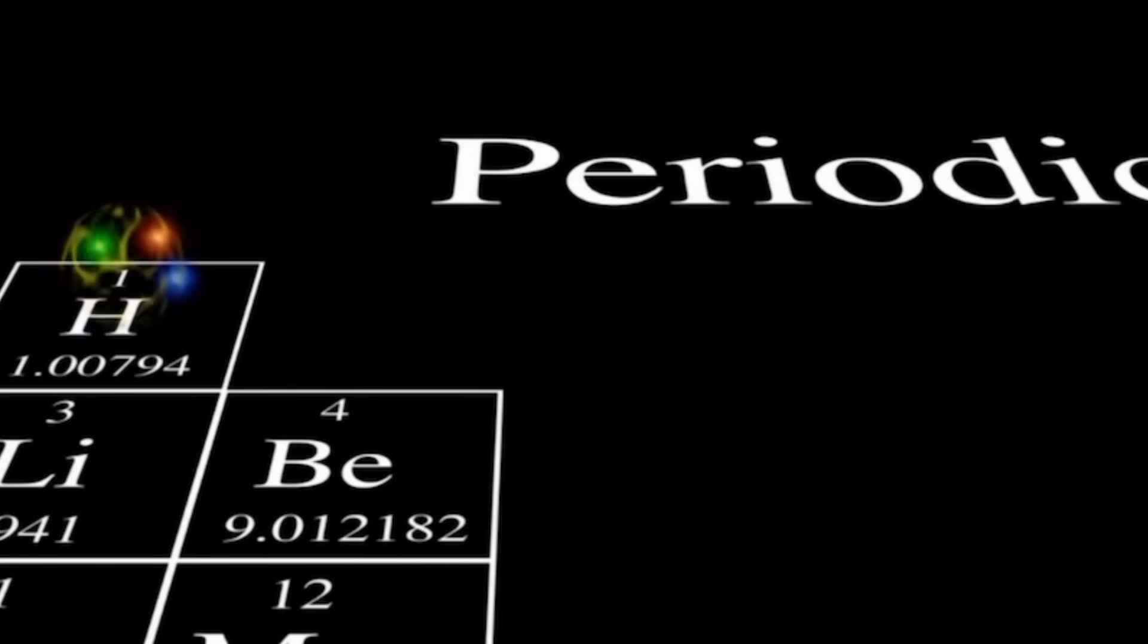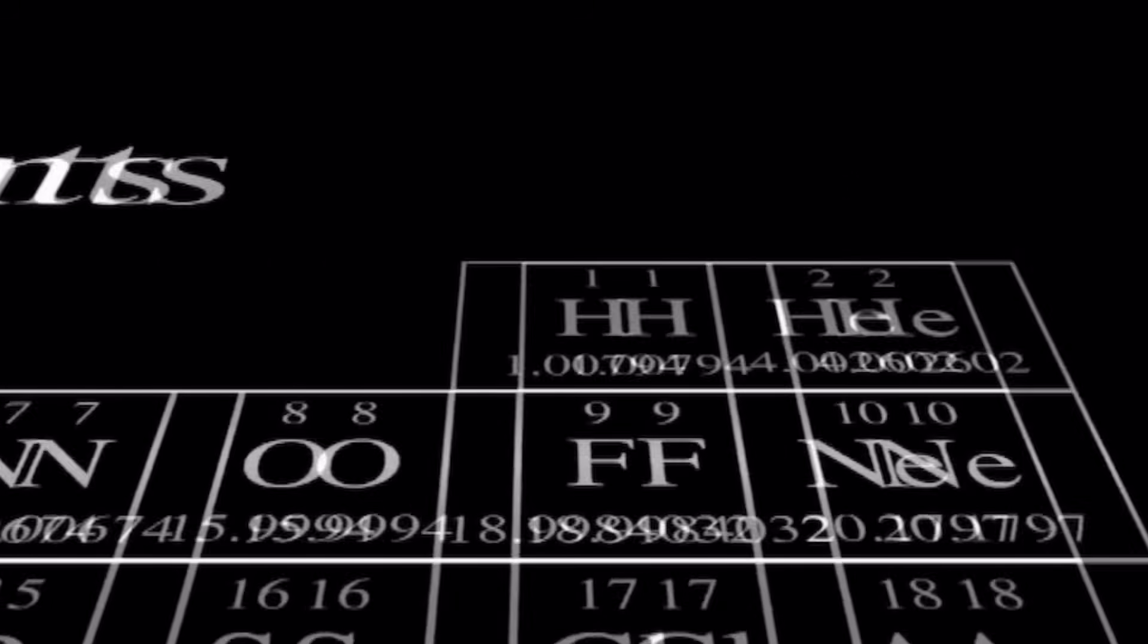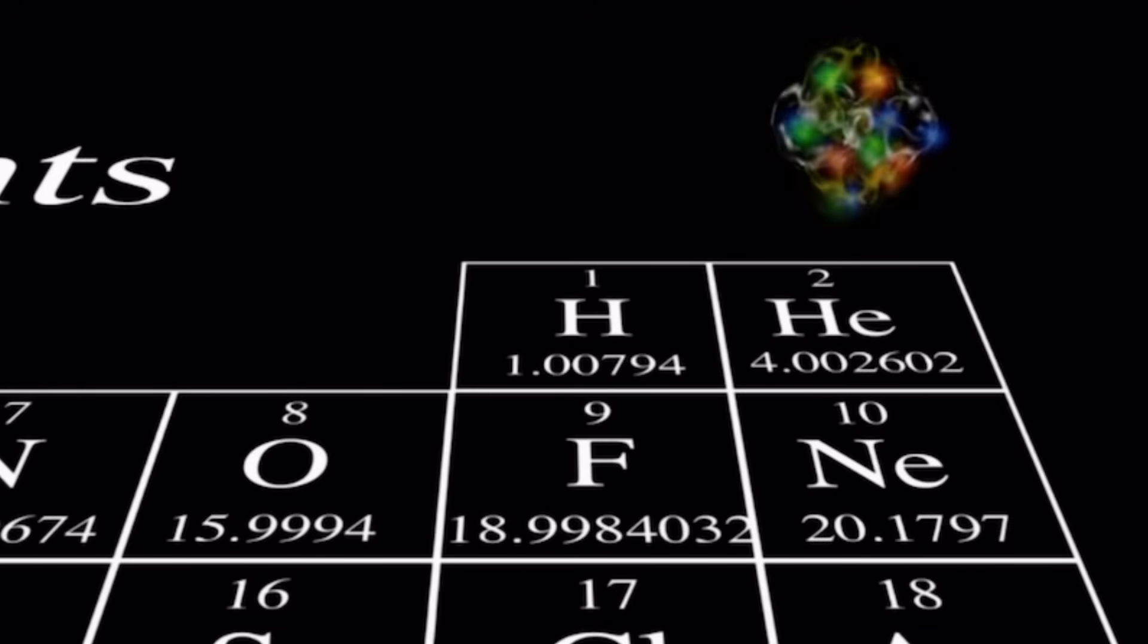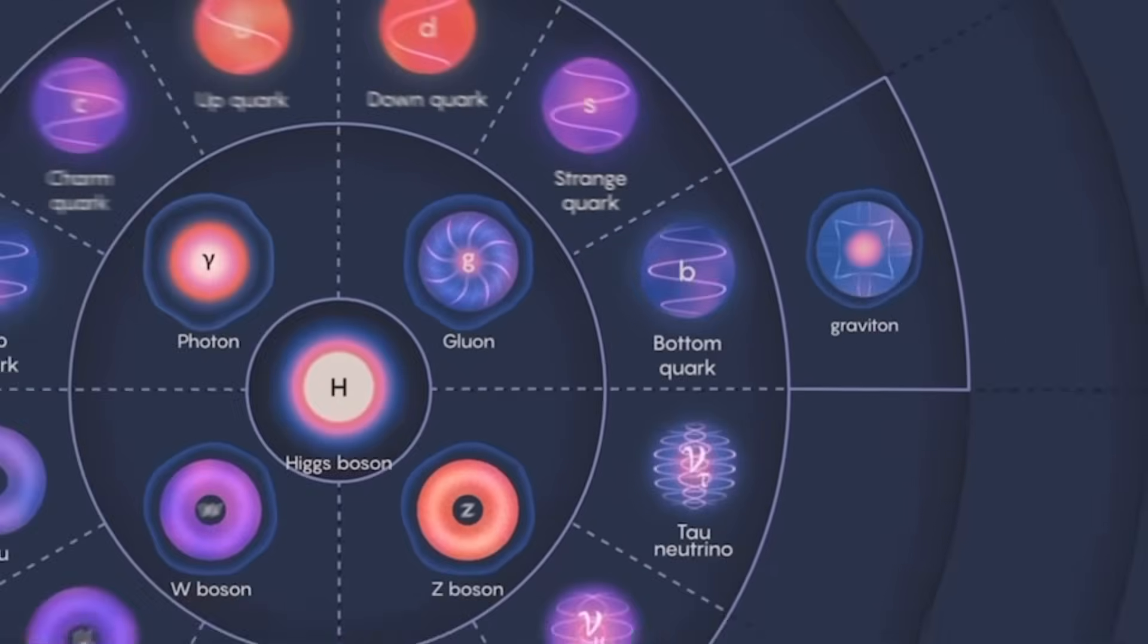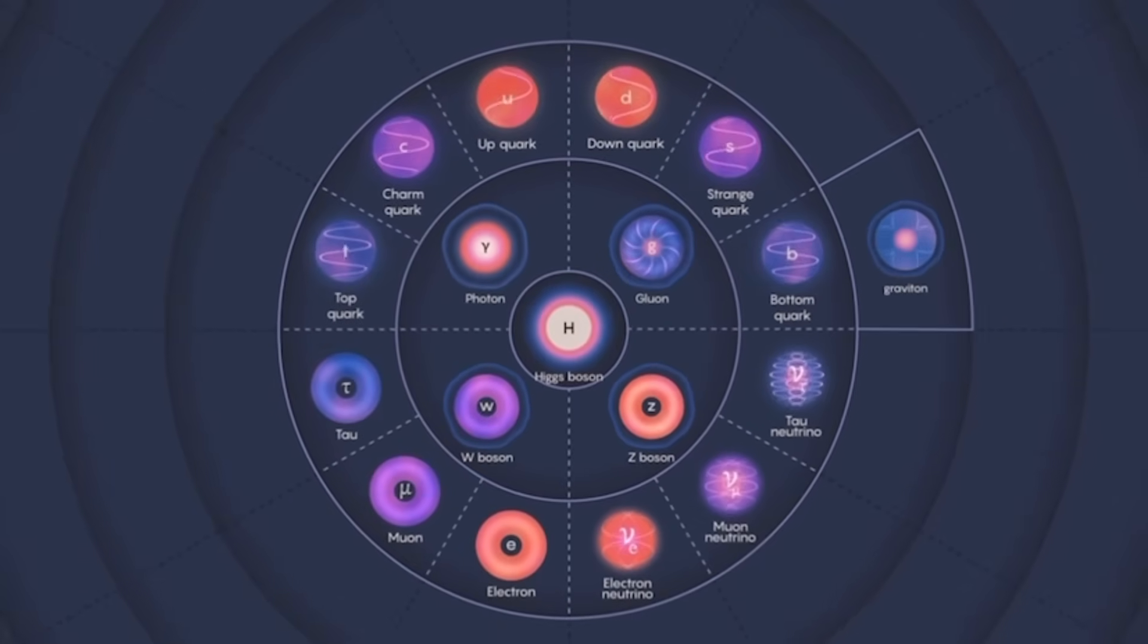All atoms are composed of the same stuff: the quarks and leptons created earlier in the universe and listed on our standard model, just different quantities and arrangements.